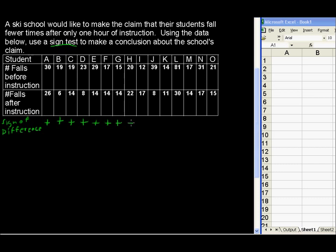20 is less than 22, so we'll put a negative sign there. 12 is less than 17, so a negative sign there. Then 39 is greater than 8, 14 is greater than 11, 81 falls is greater than 30 falls, some improvement. 17 is greater than 14, 31 is greater than 17, and 21 is greater than 15.